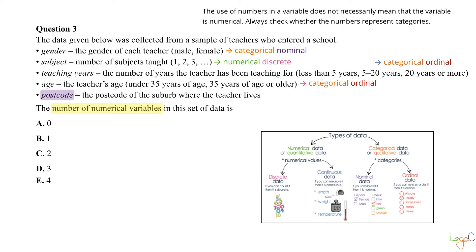Postcode: the postcode of the suburb where the teacher lives. Ask the question, does it make sense to calculate the mean of this variable? In this case, it doesn't, which means that this is a categorical ordinal variable. So the answer we are after is option B: one.